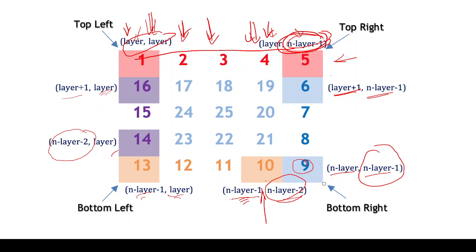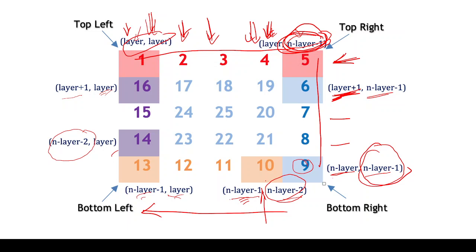For direction 2, going top to bottom, the column remains the same at n minus 1 minus layer. The row changes from layer+1 up to n minus layer. For direction 3, going right to left, we have already completed the previous column. Now the row is n minus layer, and the column decrements from n minus layer minus 2 down.